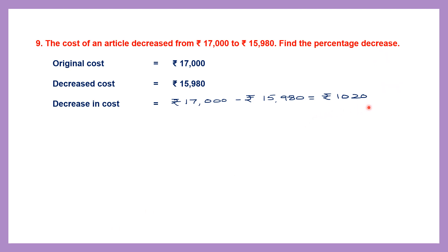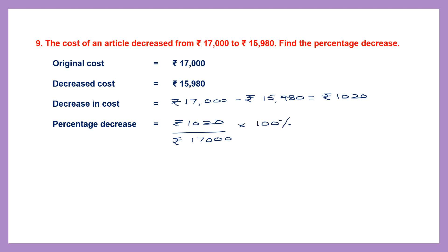Now we find the percentage decrease: decrease in cost ÷ original cost × 100% = 1020 ÷ 17,000 × 100%. Cancelling two zeros from each, then cancelling 17 and 102 (since 17 × 6 = 102), we get 6%. The percentage decrease is 6%.